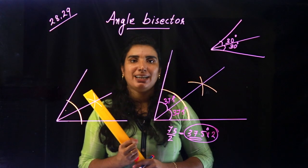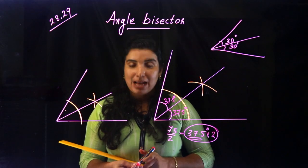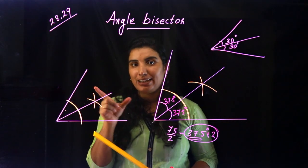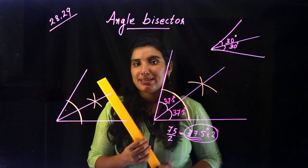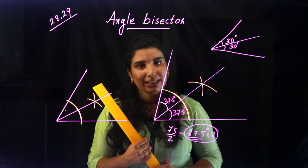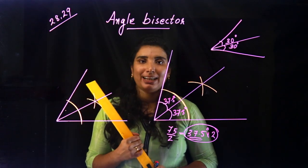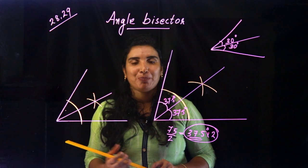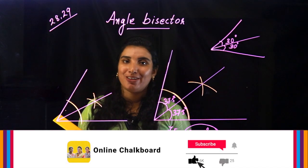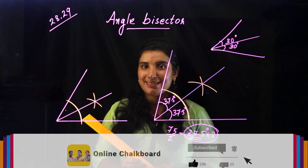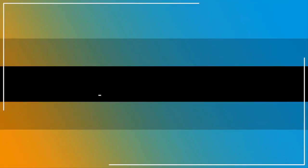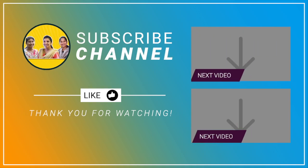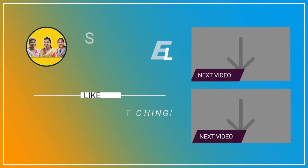We will use the angle bisectors. In this video, we will use a line with perpendicular bisectors. We will use the angle bisectors to construct the angle bisectors. We will use angle bisectors for other problems as well. As I said, I can't hear the angle bisectors clearly.